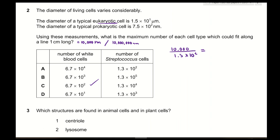To calculate the number of streptococcus cells — which is a prokaryotic cell — because the size is in nanometers, we divide 10,000,000 nanometers by 7.5 × 10² nanometers, giving us 1.3 × 10⁴. The answer is C.